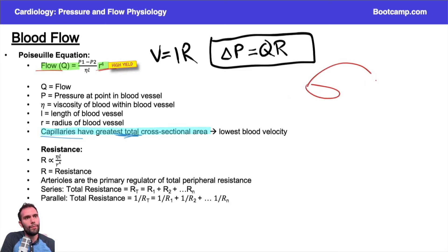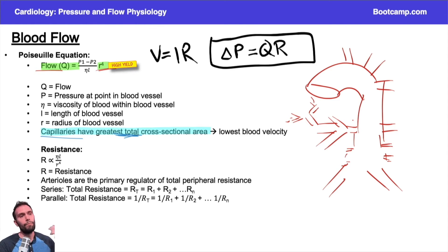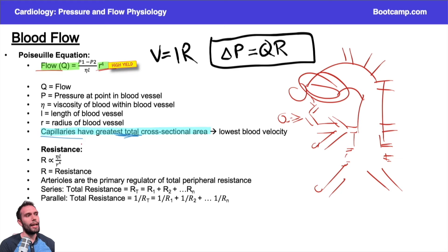Think about how blood vessels branch: you start with the aorta, then vessels branch off — the abdominal aorta, iliac arteries, and more branches at every level, eventually reaching capillaries. There are so many capillaries that if you add up their total cross-sectional area together, it's far greater than the single aorta. So capillaries in general have the greatest total cross-sectional area when you add them all up, because there are so many of them.